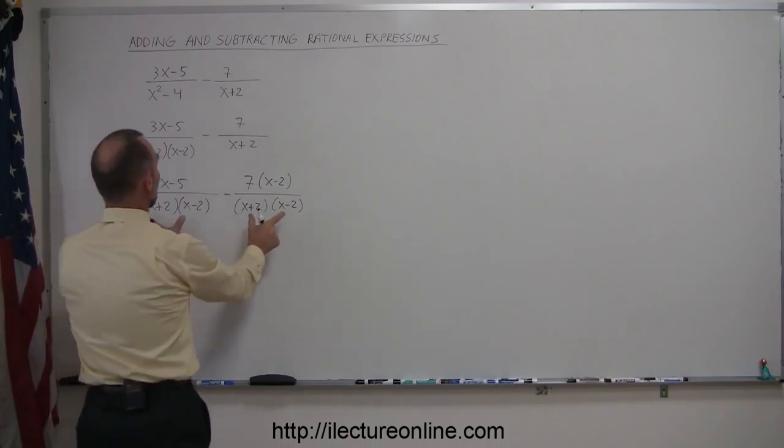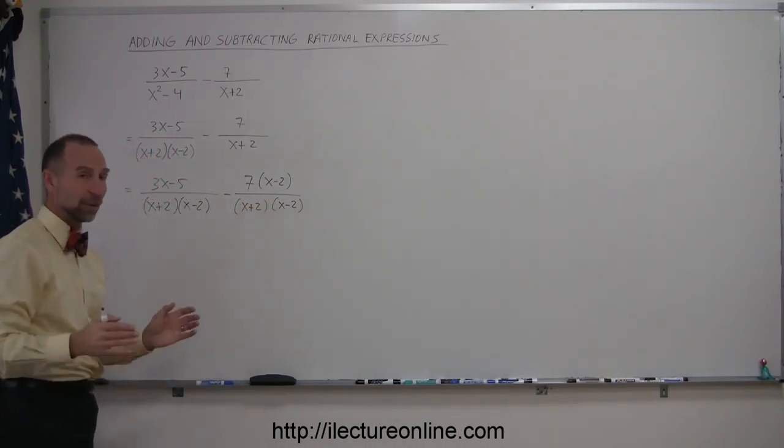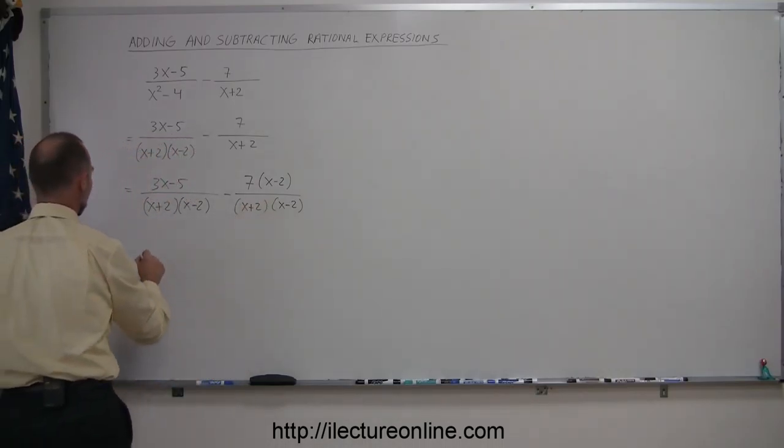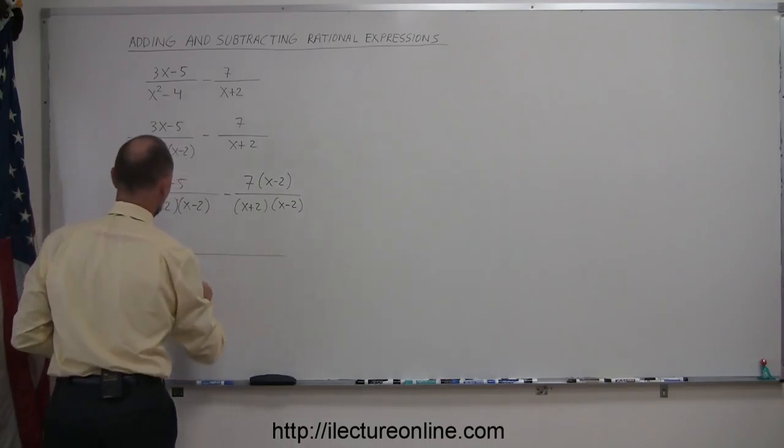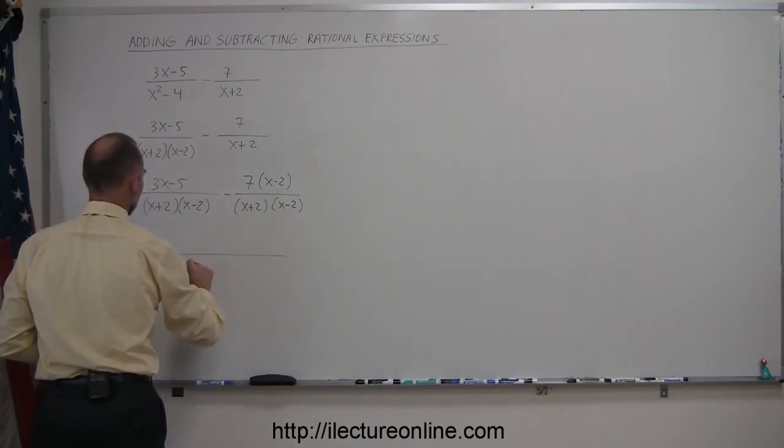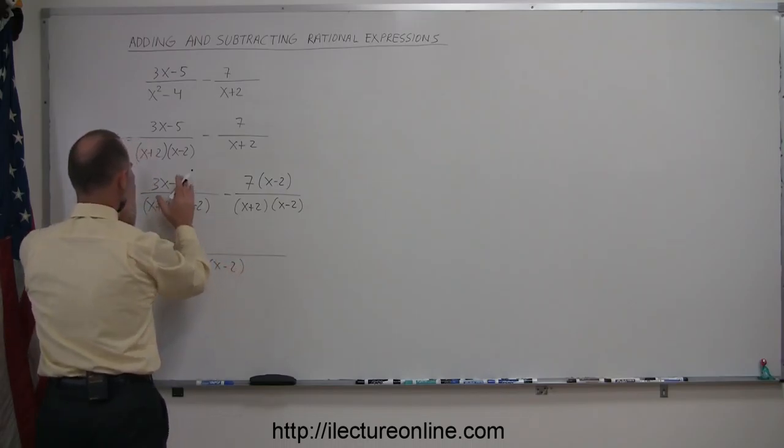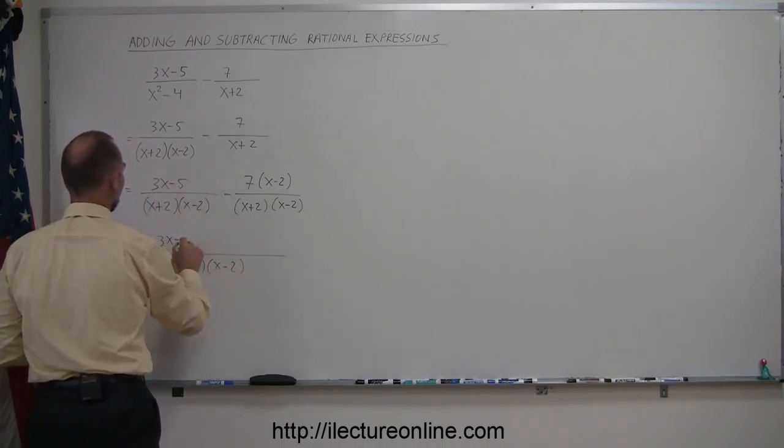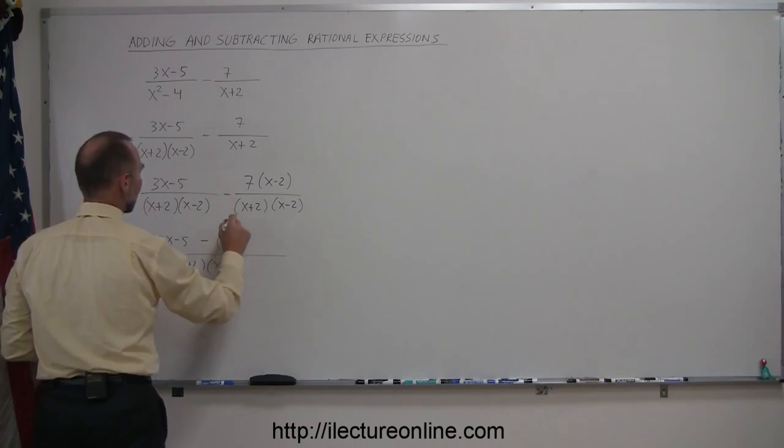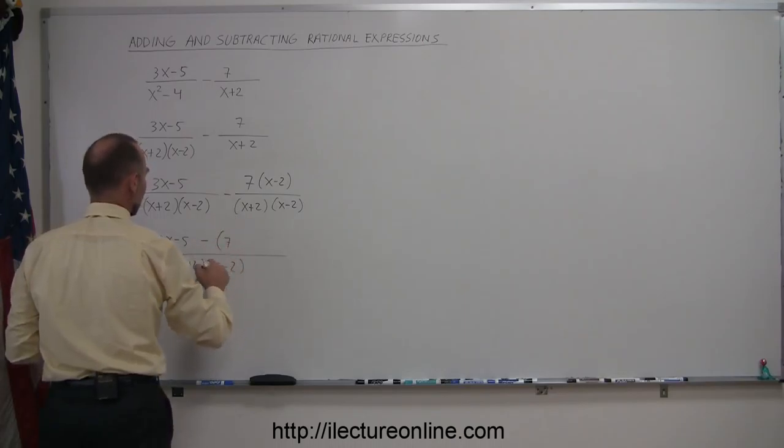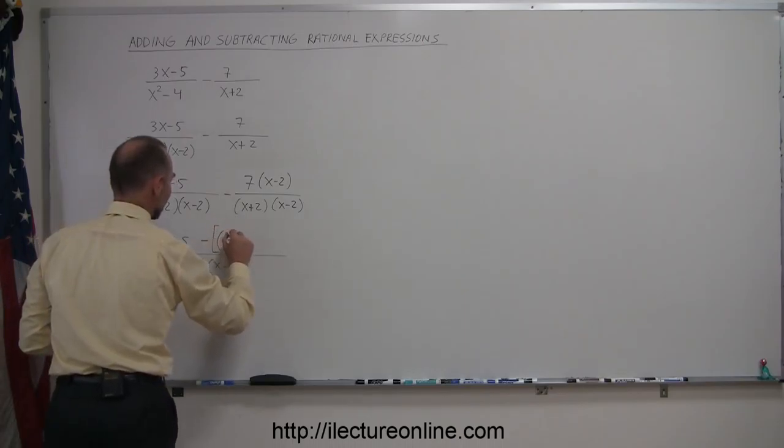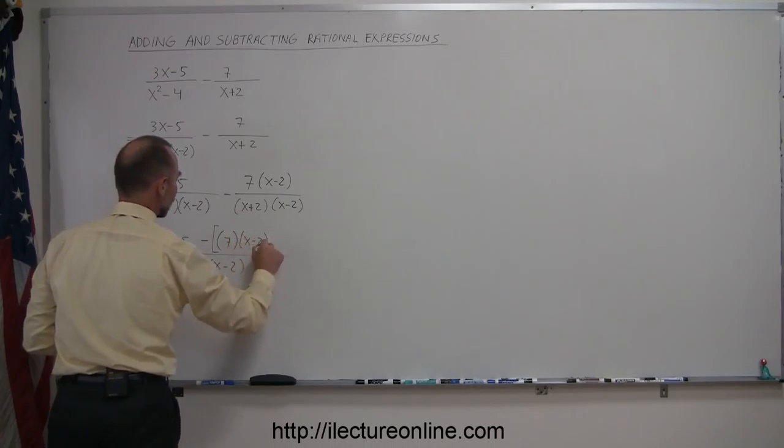Now you can see that you have two common denominators. They're both the same, so we can write the whole thing over one common denominator. So this is equal to the whole thing over (x+2)(x-2). And in the numerator here, we have a 3x-5. And then we subtract from that a 7, and I'll use brackets, 7 times (x-2).